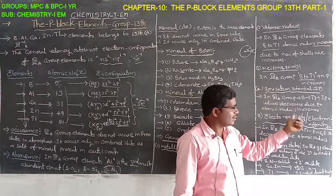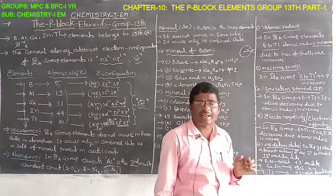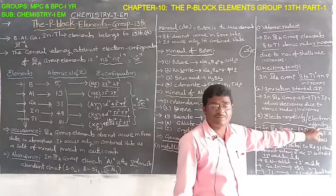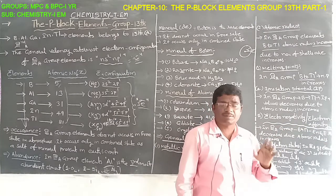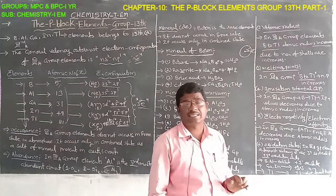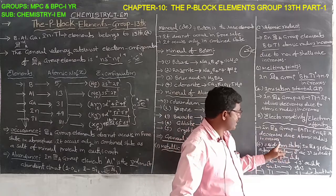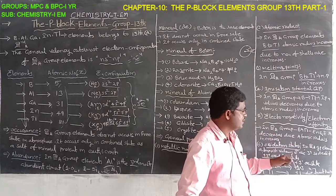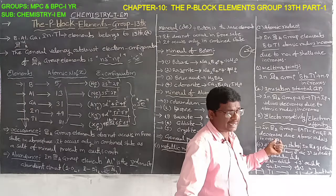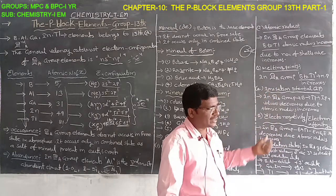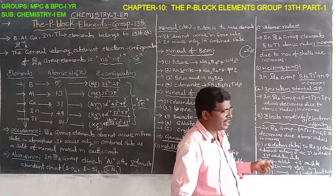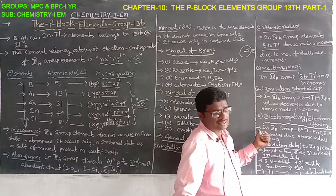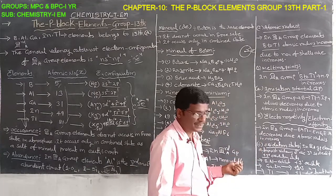Fifth property — electronegativity and electron affinity. Electronegativity is the tendency of an atom to gain electrons. Electron affinity is the energy released when one electron is added to the outermost shell. In 13th group elements, from boron to thallium, both electronegativity and electron affinity decrease due to increasing atomic radius and number of shells.